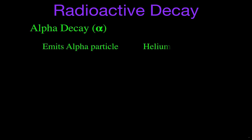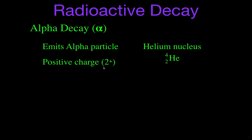For alpha decay, it's called alpha decay because it emits what we now call an alpha particle. An alpha particle is basically a helium nucleus in that it is made up of two protons and two neutrons, so it has the basic makeup of a helium nucleus. We give it the designation helium — He — with an atomic number of two and a mass number of four.